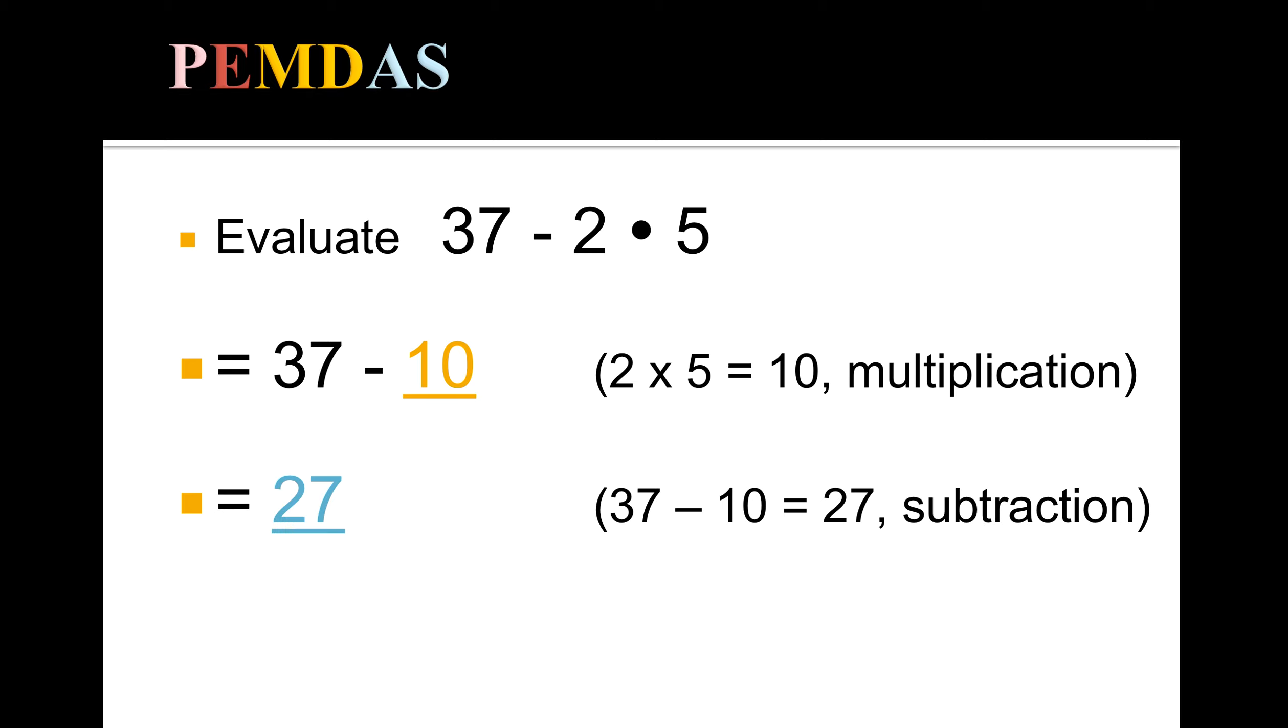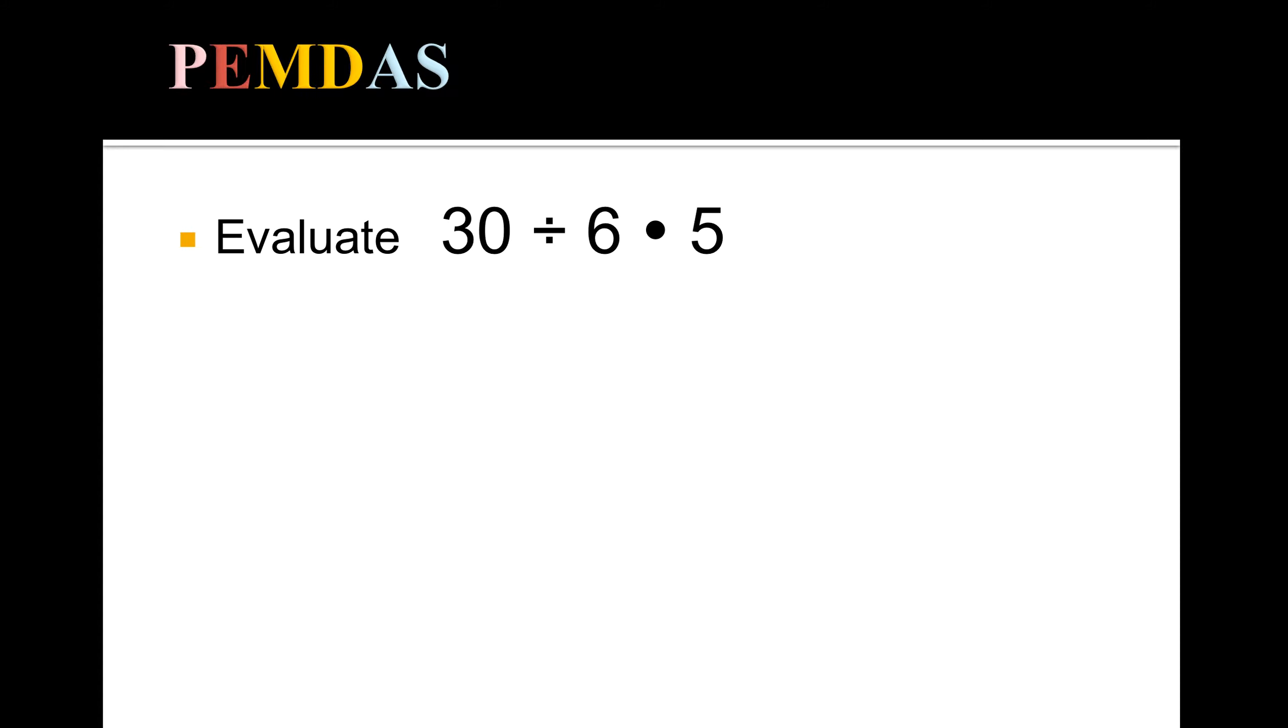Next up: 30 divided by 6 times 5. So the most common error students might make is to think, 'Oh, PEMDAS—I got to do multiplication first! 6 times 5 is 30, 30 divided by 30 is 1.' No, incorrect! Multiplication and division have equal priority, so we're going to do whichever comes first as we read it left to right.